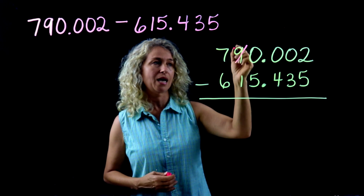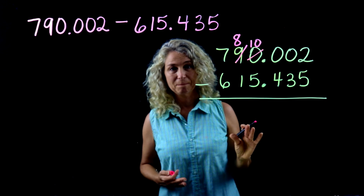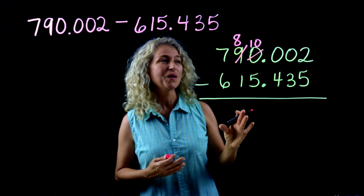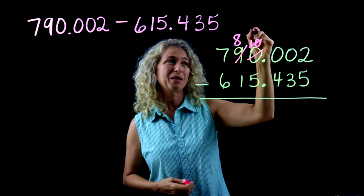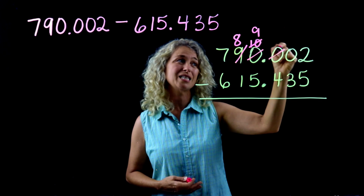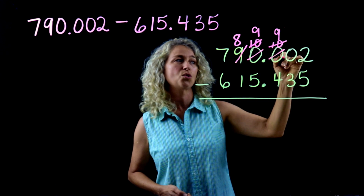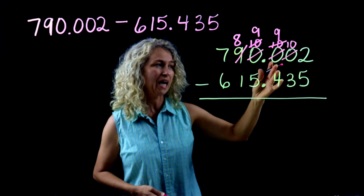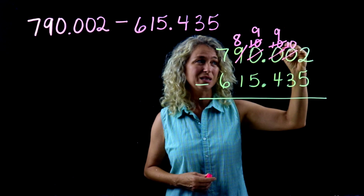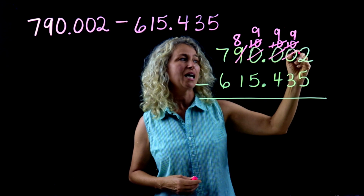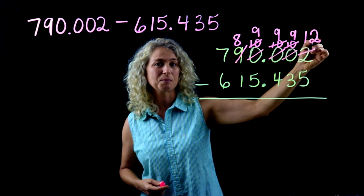We take one away from the nine and it becomes an eight. That borrowed one becomes a ten, but we still need to borrow further. We take from that ten, making it a nine, so the next position becomes a ten. We do this again — ten becomes a nine — and finally we take one away so the last position becomes a ten.